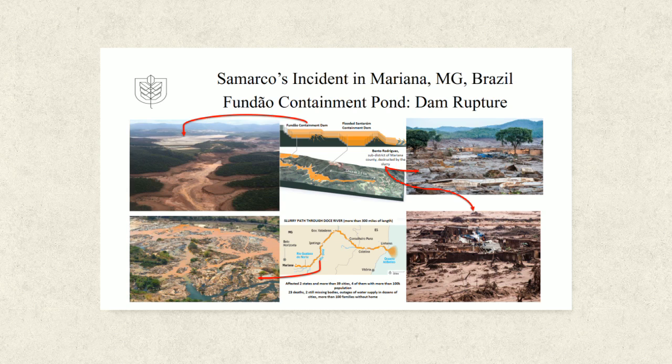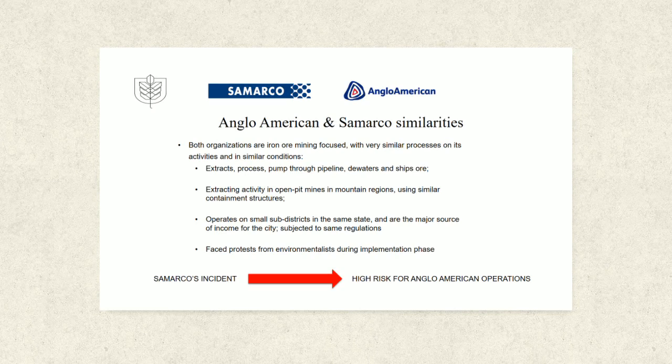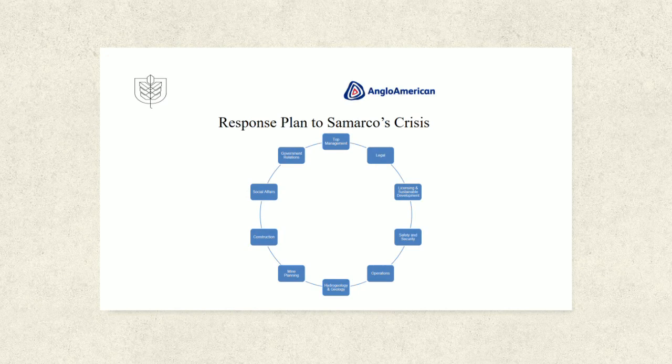The causes of the incident are still being investigated by government and regulatory agencies. Anglo-American and Samarco have a lot of similarities in their business — both companies are iron ore mining-focused, their extracting activities are in mountain regions with similar containment structures, and both are surrounded by small sub-districts subjected to the same state regulations. So the Samarco incident represents a huge risk factor for Anglo-American operations. Anglo-American already had a crisis management team in place, which allowed them to prepare a response plan in a matter of hours with all critical processes and functions, to give a structured answer to key stakeholders in the wake of the crisis.